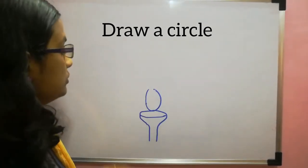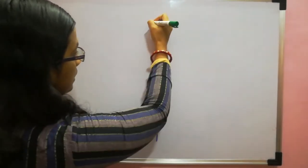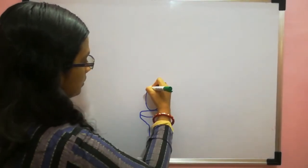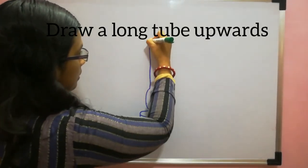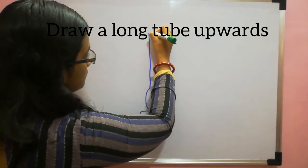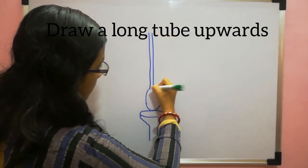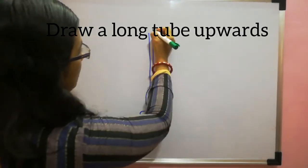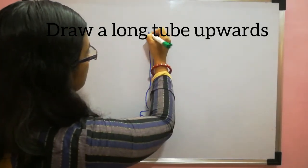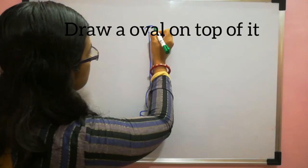Then what you can do is make a long tube. From this circle make a long tube like this. Now again you have to make an oval like this over the top.